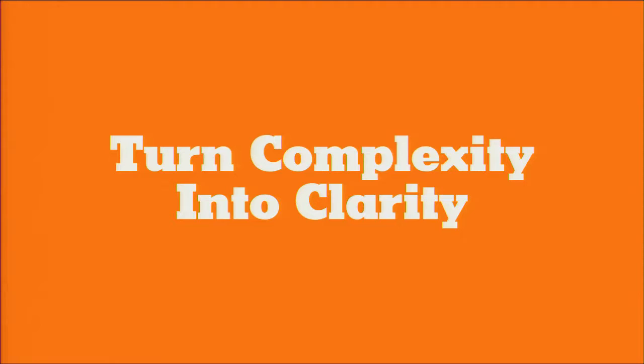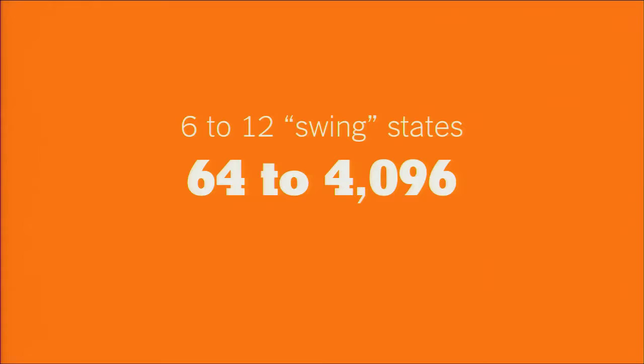We also try to use design to take complex things — like all the possible electoral college scenarios leading up to a presidential election — and make them clear to readers. Some states are a pretty safe bet: California will go Democratic, Wyoming will go Republican. So the election often rides on about six to twelve swing states. But even looking at combinations of the way those states could vote means there are somewhere between 64 and 4,000 different outcomes just on that small set of states.